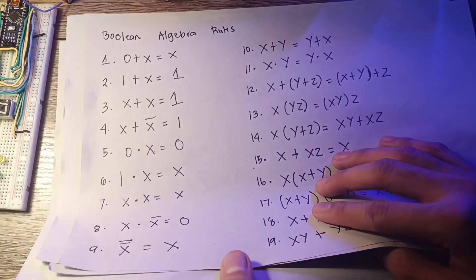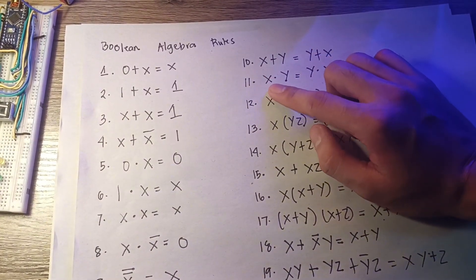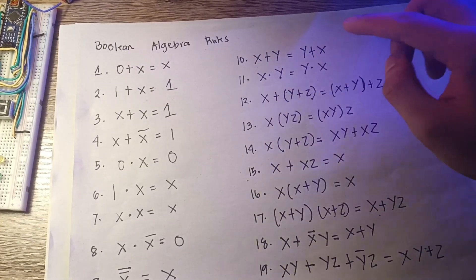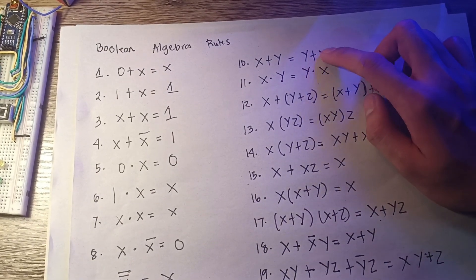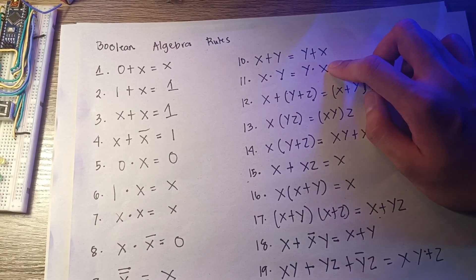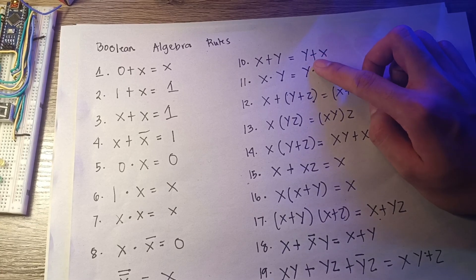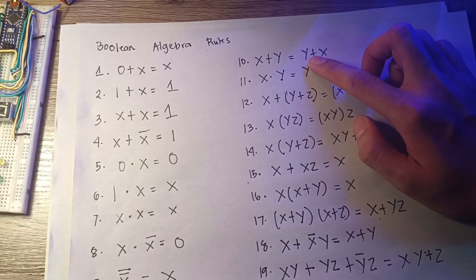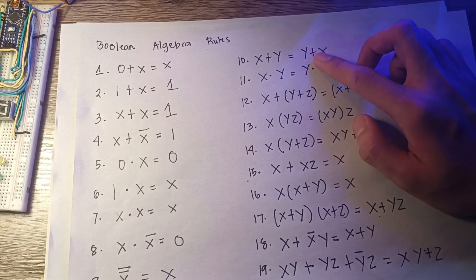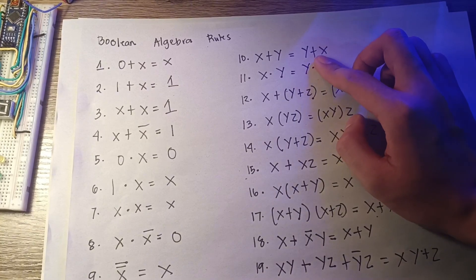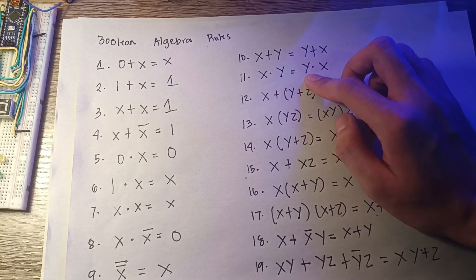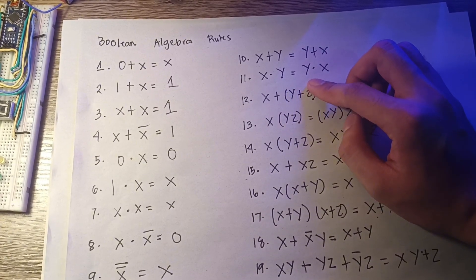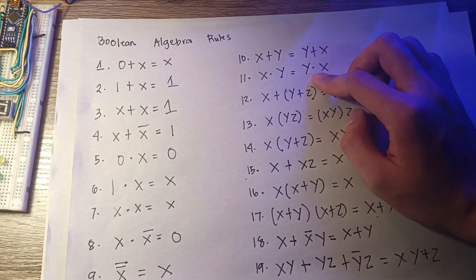Rule 10 and 11 are known as the commutative laws, which express that the order in which a combination of terms is performed does not affect the result. Rule 10 is the commutative law of addition, which states that the order of addition does not affect the sum. Rule 11 is the commutative law of multiplication, which states that the order of multiplication does not affect the product.